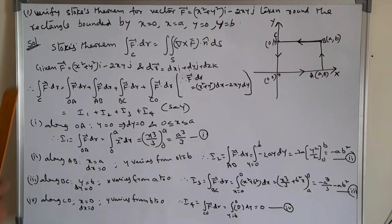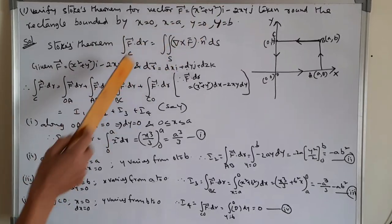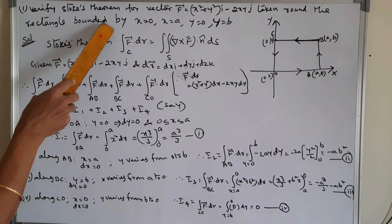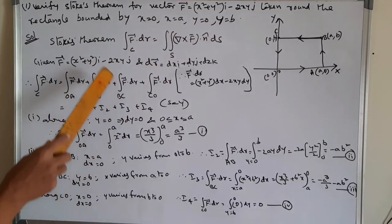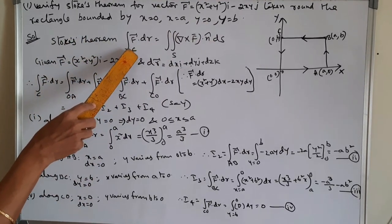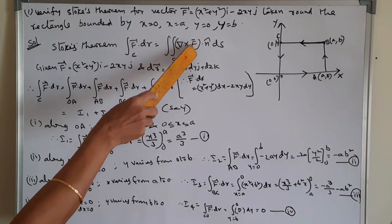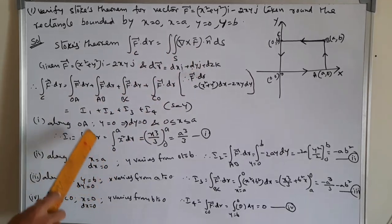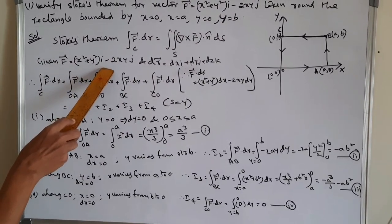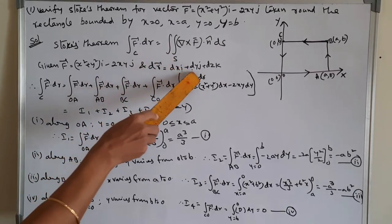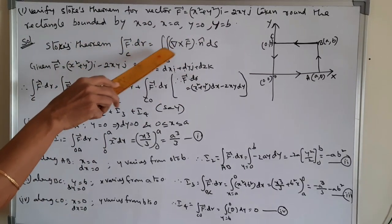First problem: verify Stokes theorem for vector F̄ = (x² + y²)i − 2xyj, taken round the rectangle bounded by x = 0, x = a, y = 0, y = b. Solution: first, the Stokes theorem statement is: integral of F̄ · dr over C equals double integral of (del × F̄) · n̂ ds over S. Here, F̄ = (x² + y²)i − 2xyj and dr̄ = dxi + dyj + dzk, taken around the rectangle with the given boundaries.